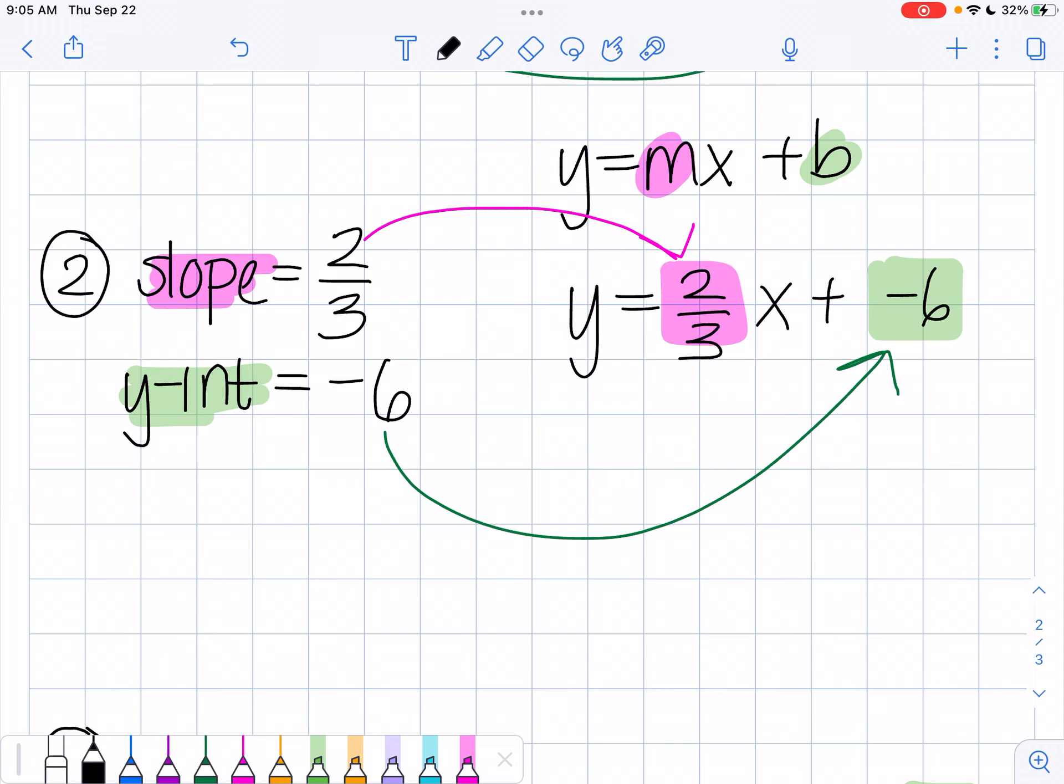Now we don't normally write plus negative. It's more accepted to write 2 thirds x minus 6. That's how you're going to see it in textbooks. But it's not incorrect if you write plus a negative because remember that subtraction means add the opposite. When you see it in a textbook, you will see it written 2 thirds x minus 6.